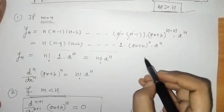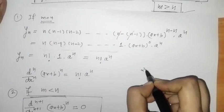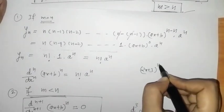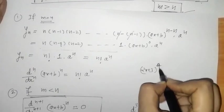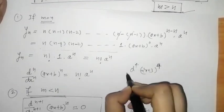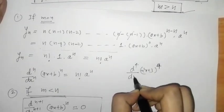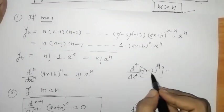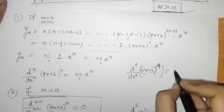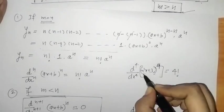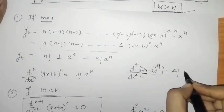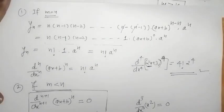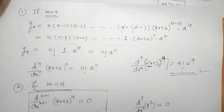Similarly, for (2x + 3)^4, if we want the fourth derivative, we apply the m = n case: the answer is 4! into 2 raised to 4. In this way we proceed for such examples.